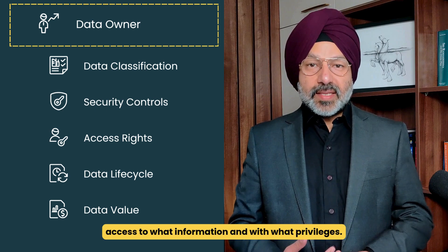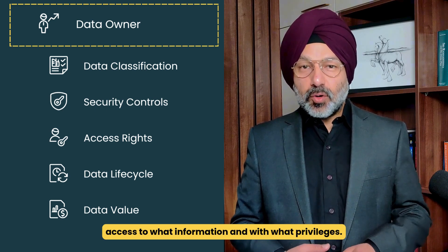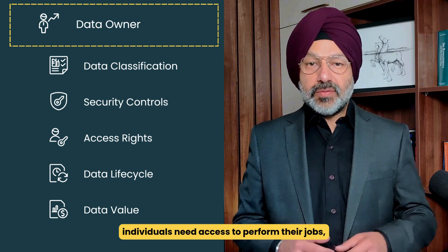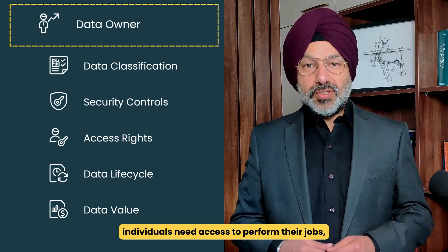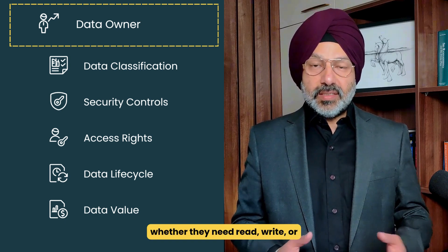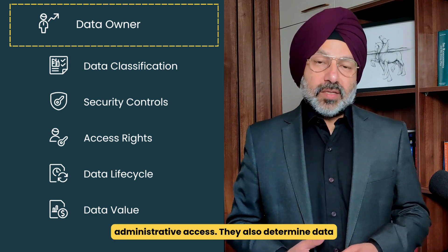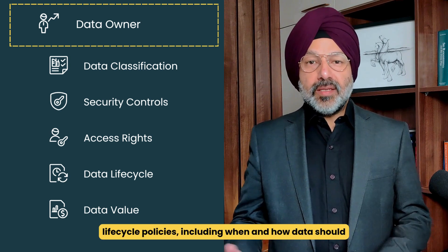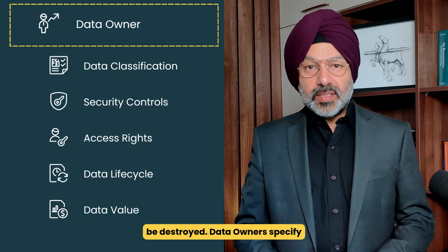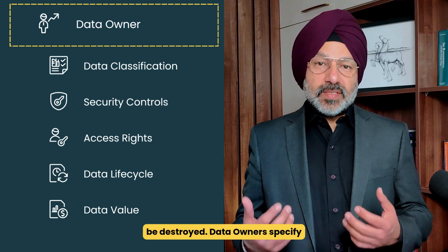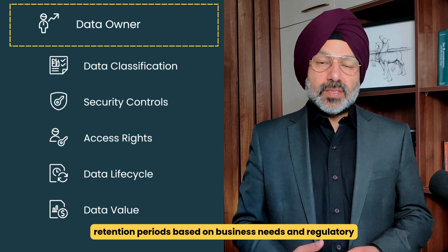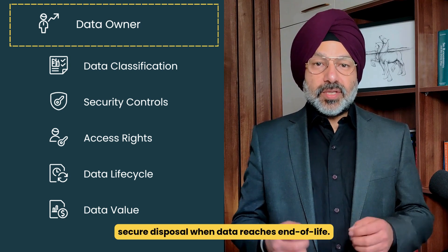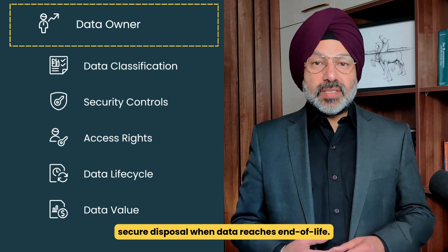They decide who should have access to what information and with what privileges. This involves determining which roles or individuals need access to perform their jobs, whether they need read, write, or administrative access. They also determine data lifecycle policies, including when and how data should be destroyed. Data owners specify retention periods based on business needs and regulatory requirements, as well as appropriate methods for secured disposal when data reaches end-of-life.